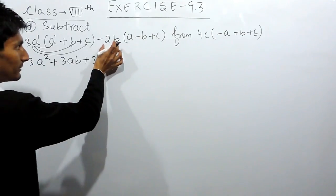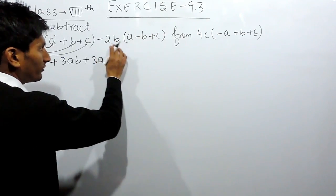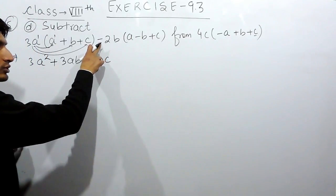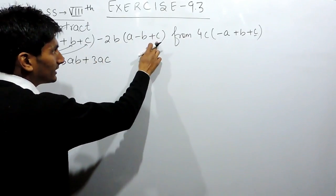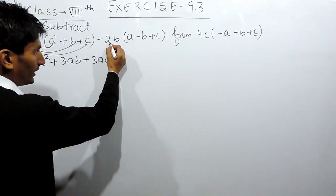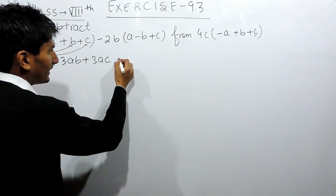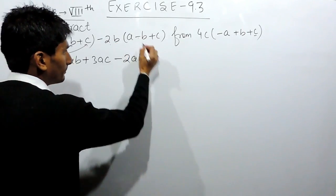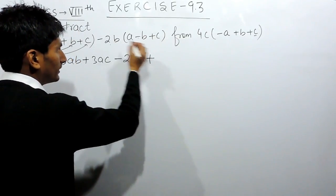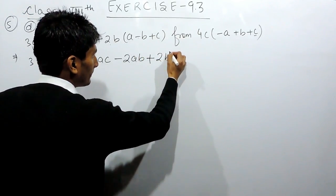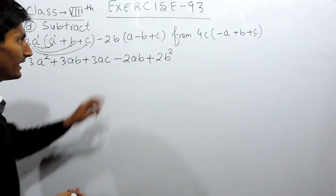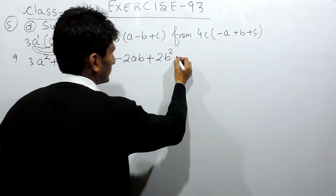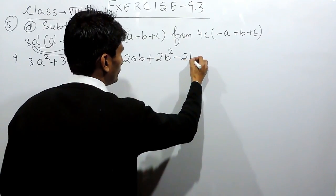Now we have to multiply the next bracket. To open this bracket, we have to multiply with all 3 terms, and there is a negative sign outside the bracket, so inside the bracket all the signs will be changed. So 2a multiplied by b will give minus 2ab. And 2b multiplied by b will be positive 2b square — the base is same, so the power is added. And at the last, this will give negative 2bc.